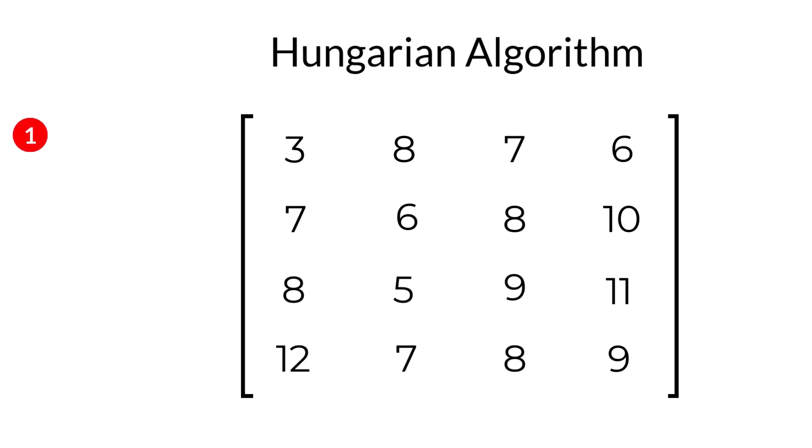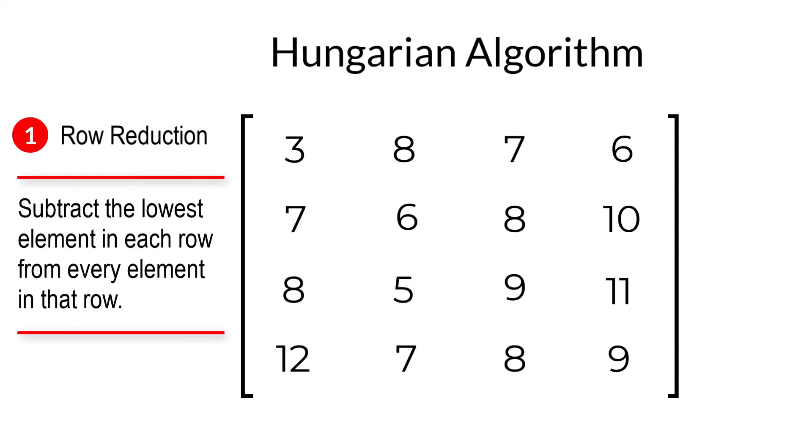Step one of the Hungarian algorithm is called row reduction. Subtract the lowest element in each row from every element in that row. For row one, the smallest value is three. So, we subtract three from every element in this row. For row two, the smallest value is six. So, we subtract six from each element in this row.